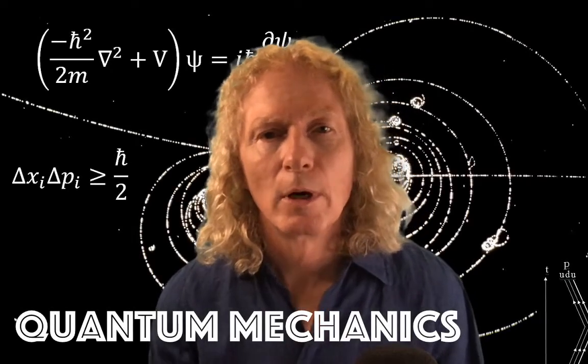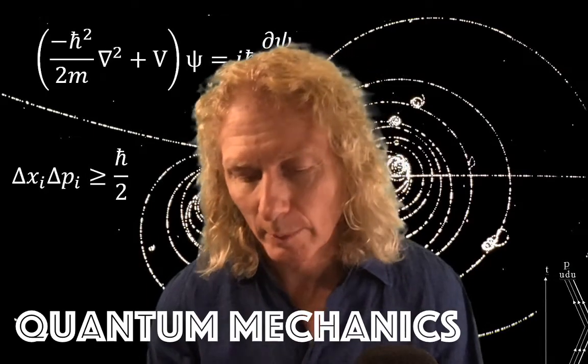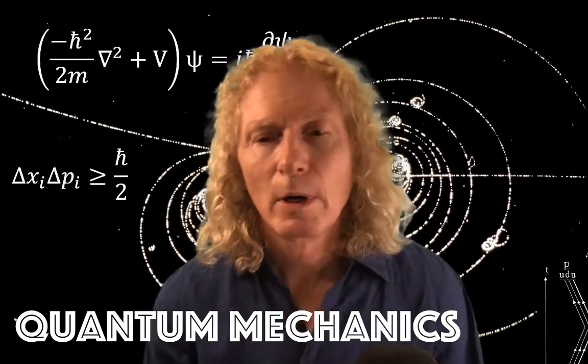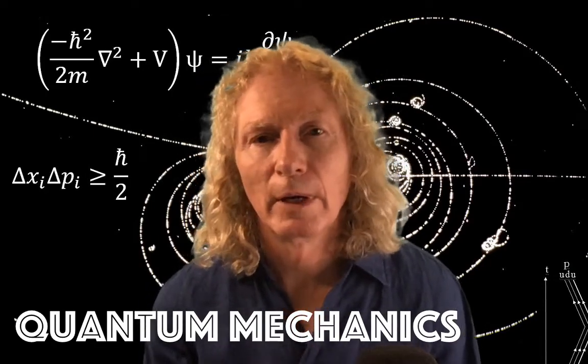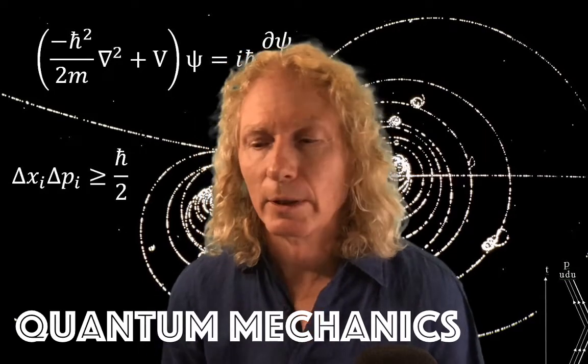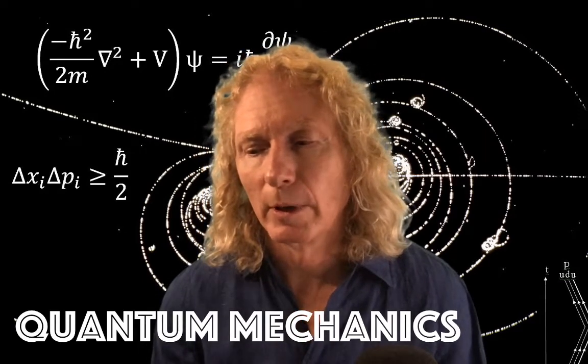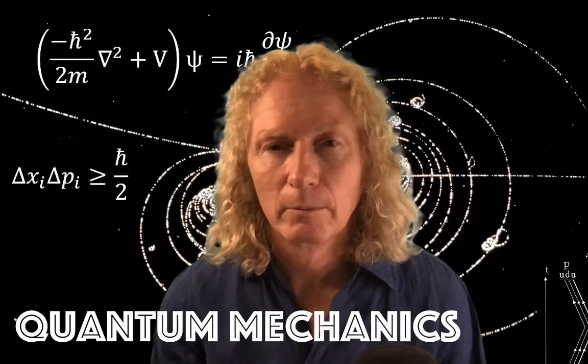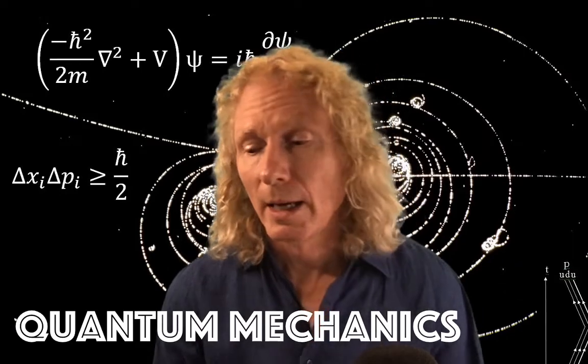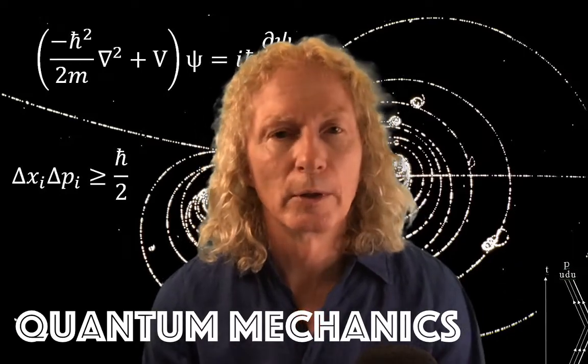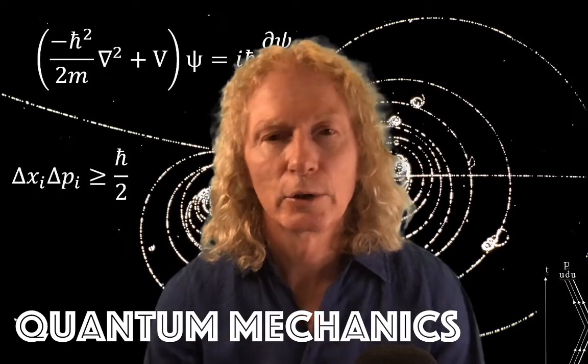Today we're going to start Chapter 1, The Mathematical Structure of Quantum Mechanics. Chapter 1 has five sections: vector spaces and inner products, linear operators, self-adjoint linear operators, eigenvalues and eigenvectors, Dirac notation, and projection operators in the spectral theorem. We'll have a lecture over each topic.